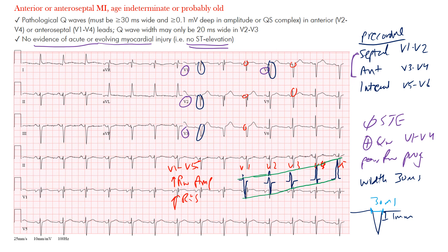R wave progression is often absent in the setting of an anteroseptal or anterior MI. To review: for an anterior or anteroseptal MI that is age indeterminate or probably old, we look for absence of ST segment elevation, poor R wave progression in the anteroseptal leads, and pathological Q waves in V1 through V4. Those are the key findings: pathological Q waves, poor R wave progression, and no ST segment elevation.